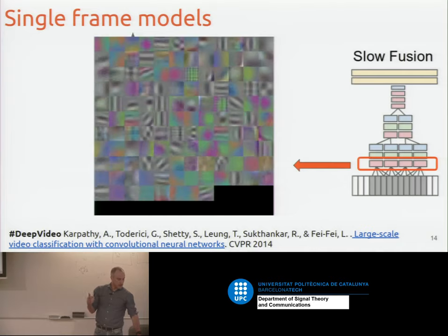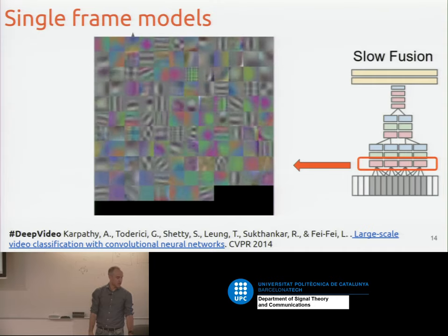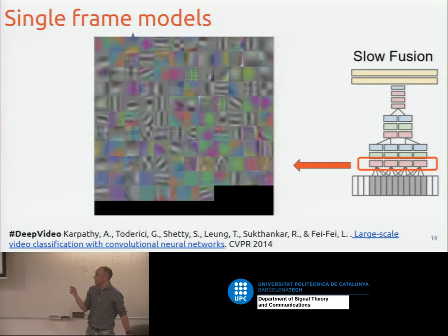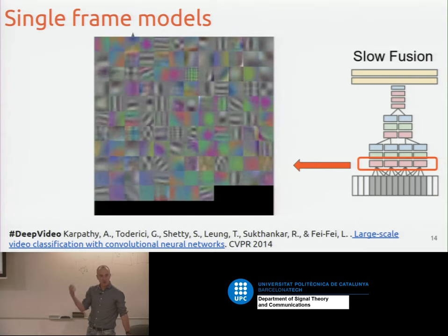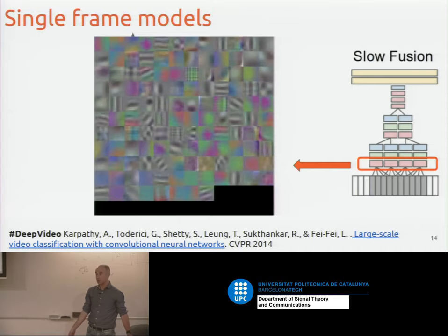There's a first popular work on video called Deep Video from 2014. The single-frame solution predicts something per frame. But they also tried stacking RGB frames — in early fusion, they stack RGB frames so the first layer of filters has more depth than three. There were also options with different intermediate towers and late fusion at the fully connected layers. They also visualized the filters, which show motion patterns similar to ImageNet visualizations but with some motion-capturing potential.